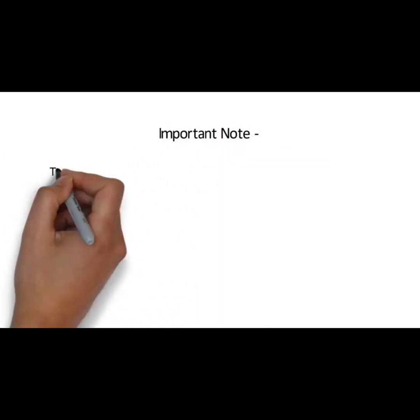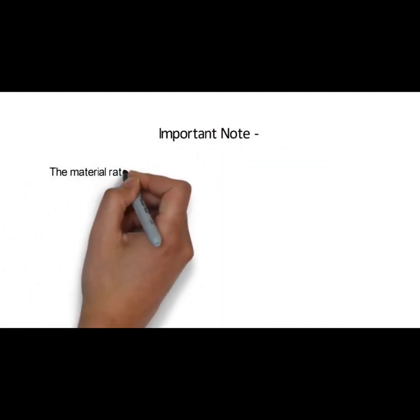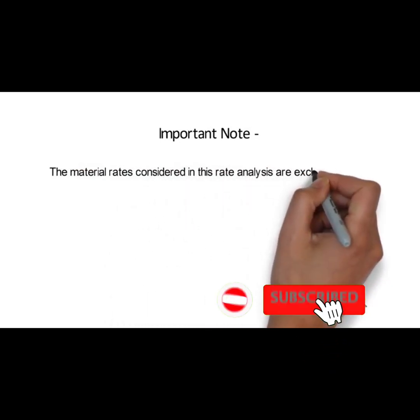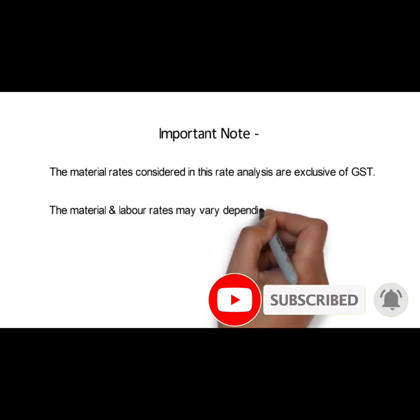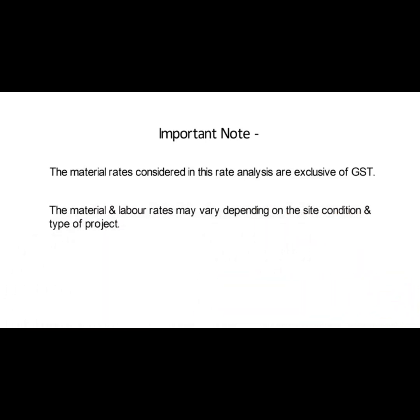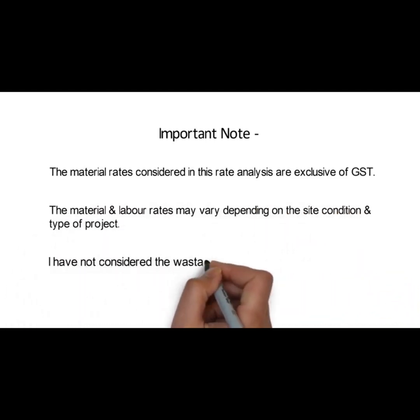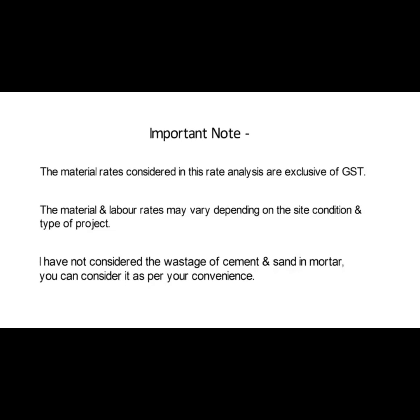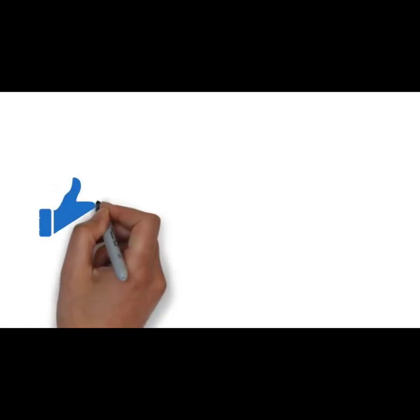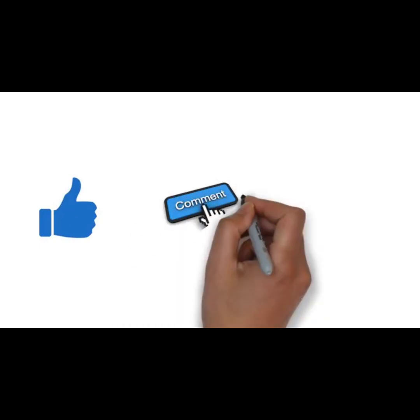Important note: the material rates considered in this rate analysis are exclusive of GST. The material and labor rates may vary depending on site condition and type of project. I have not considered the wastage of cement and sand in mortar — you can consider it as per your convenience. So friends, this was the rate analysis of AAC block masonry. If you like this video, please hit the like button, and if you have any suggestions, please give your comments.